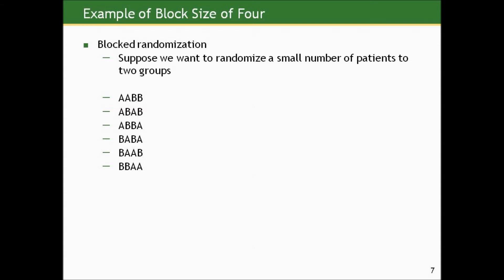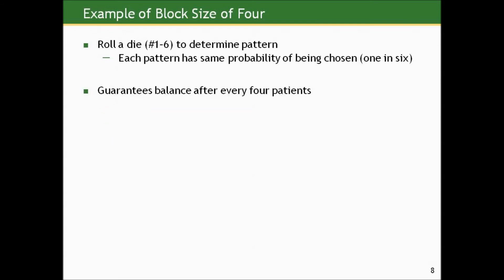A, A, B, B, A, B, A, B, etc. So we write those out in advance. And then what we do is we roll a die with numbers one through six. If we get a one, we pick the first one, A, A, B, B. If we get a two, we pick the second one, A, B, A, B. And what we do is we randomize four patients at a time. And what this does is it guarantees balance after every four patients between the two groups.